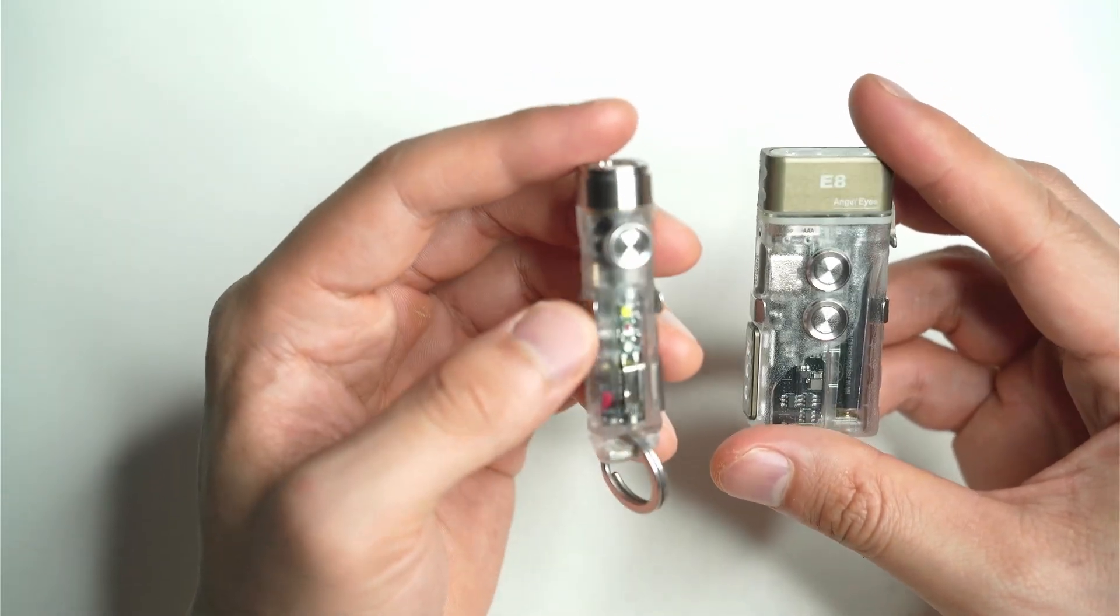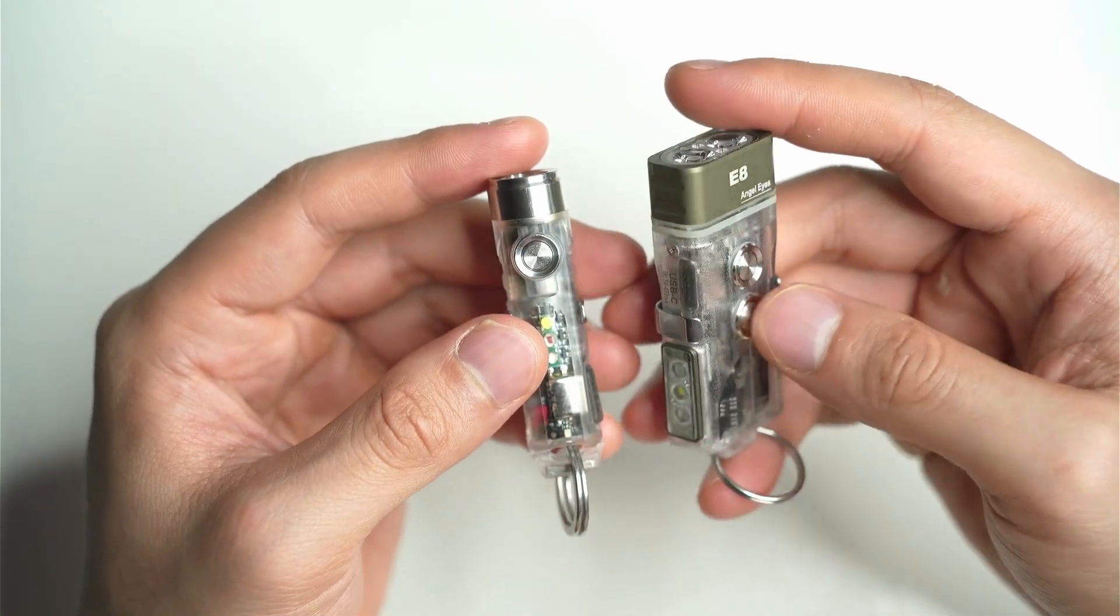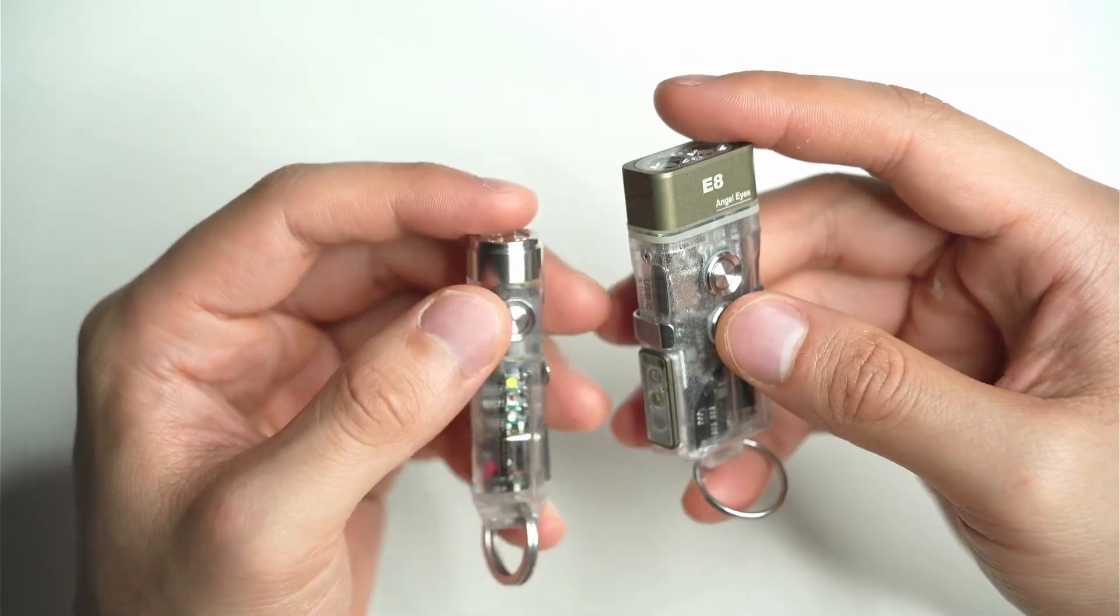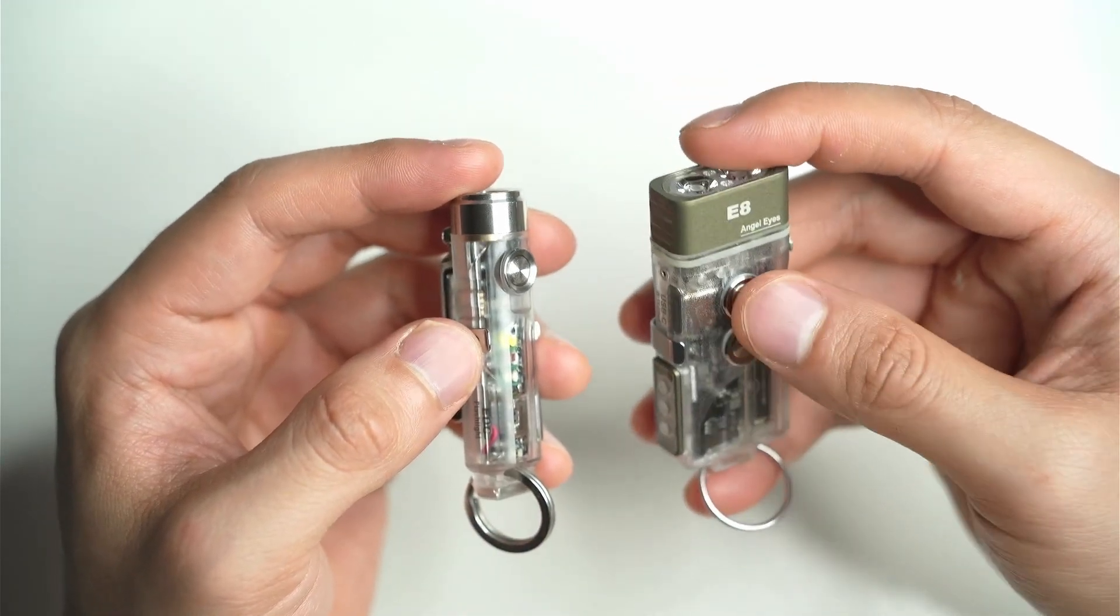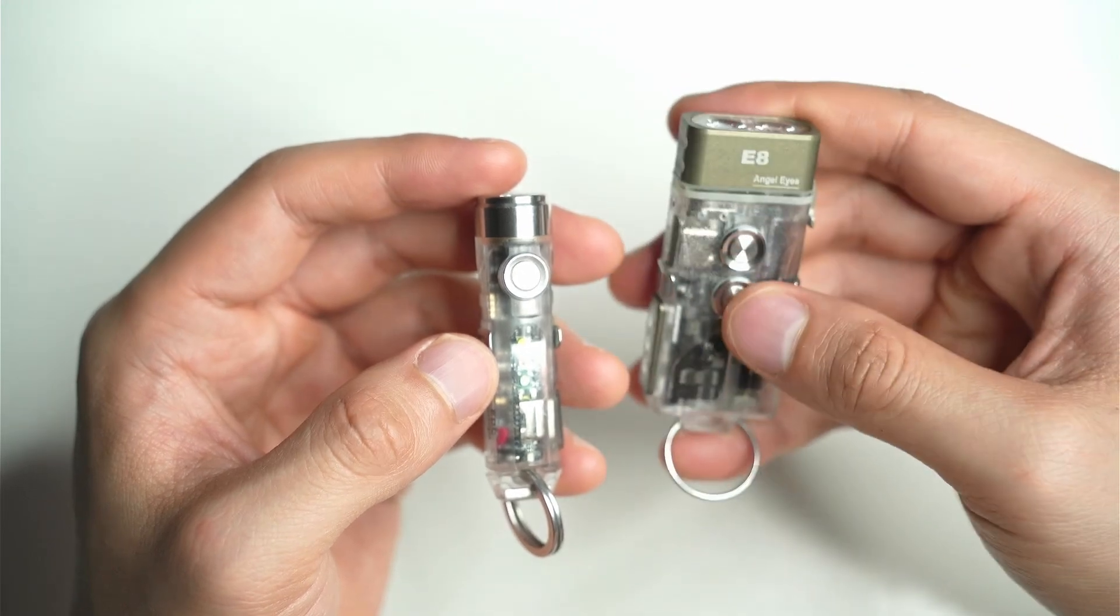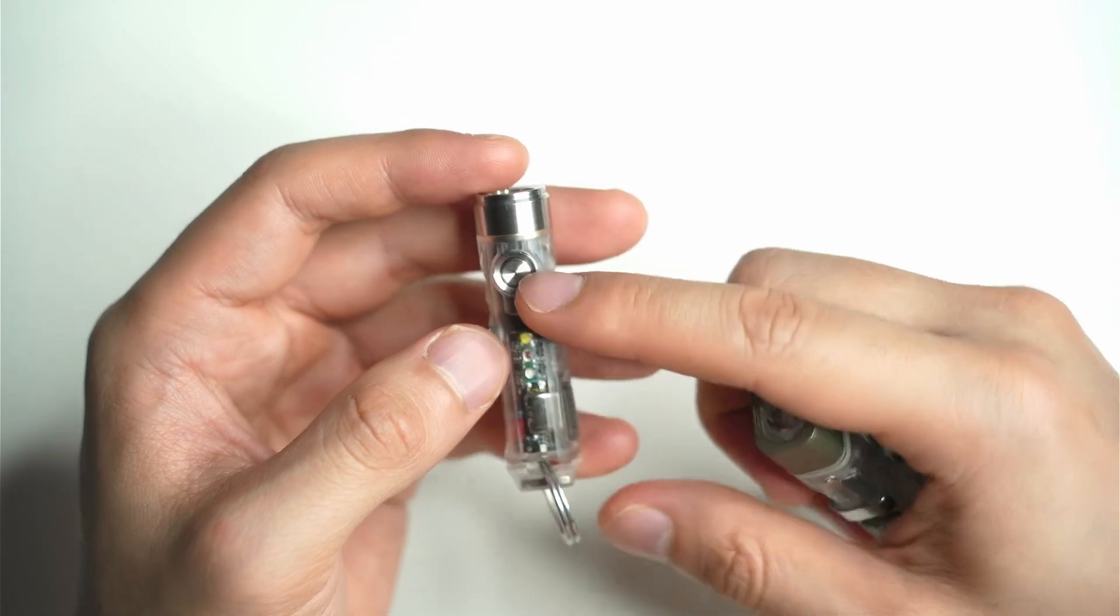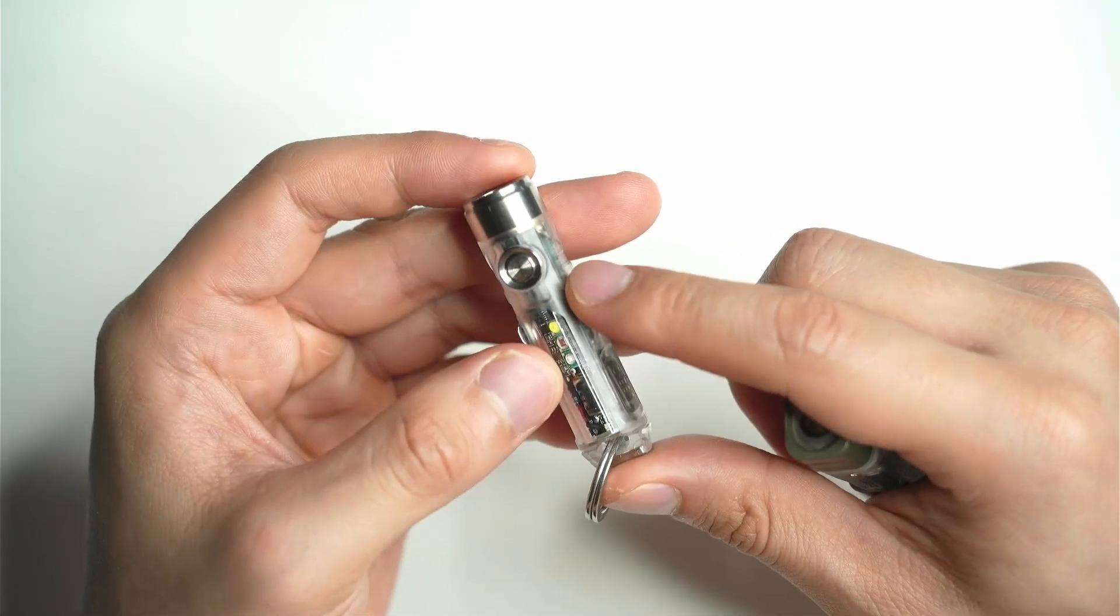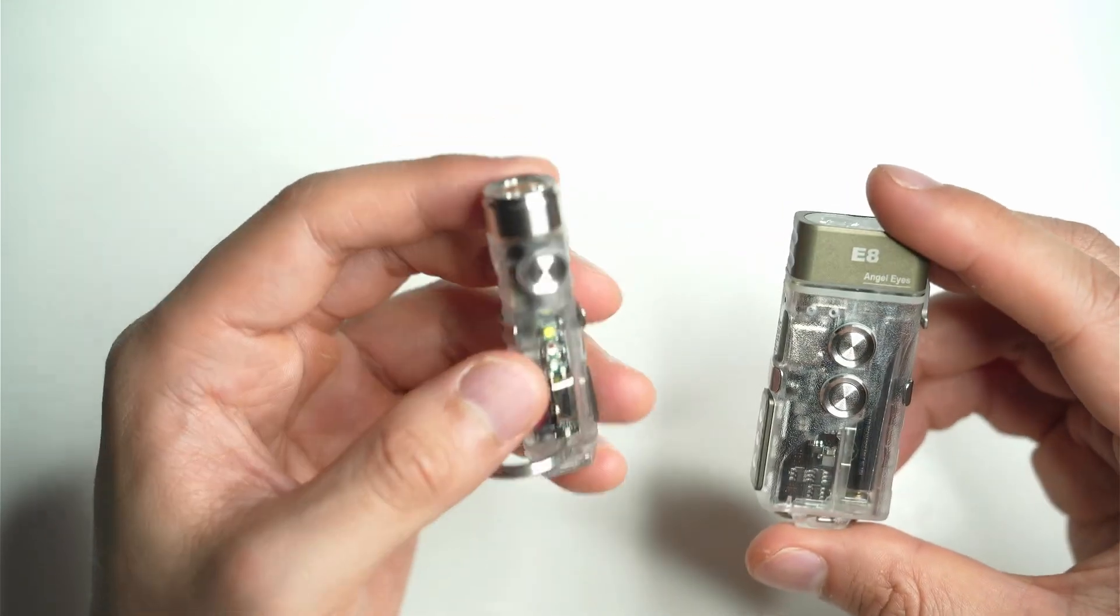I find the auxiliary LEDs are a lot easier to operate on the E8 as well because you've got only one button here on the A8 where you've got two buttons on the E8. So it's simpler. The top button operates the top two LEDs, bottom button operates these three, whereas you need to press a whole bunch of different combinations to get into these different LEDs.